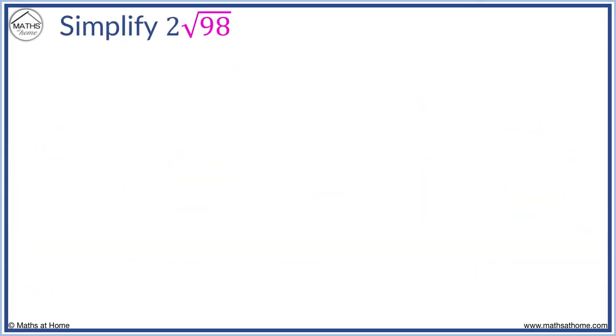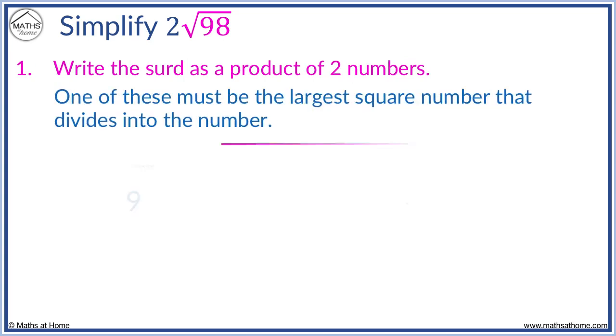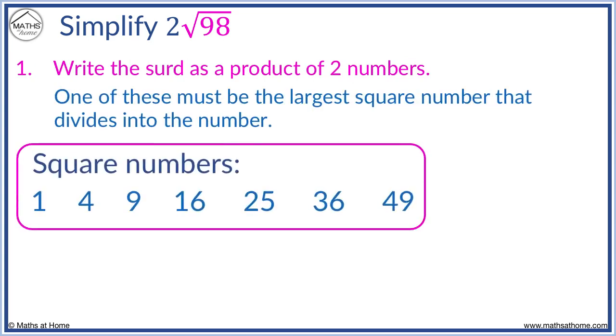Here is 2 root 98. Because we have 2 in front of the surd we write this 2 down first. Now we find the largest square number that divides into 98. This is a more challenging example but since 98 is even we can try dividing it by 2. 49 is the largest square number that goes into 98.